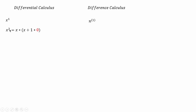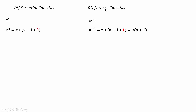For the powers of n, I'm going to use a parenthesis notation. Let's see how we can write x squared: x squared can be written as x times (x+1) times 0. I'm writing it in this pattern so you can find the difference between differential calculus and difference calculus. In differential calculus, we are talking about infinitesimally small change — something that tends to zero. But in difference calculus, we refer to a change by the amount of one unit.